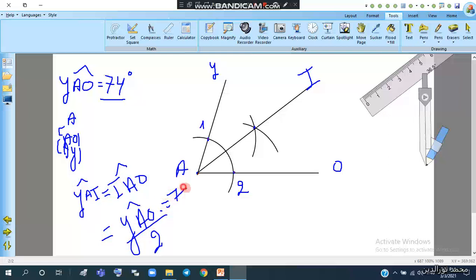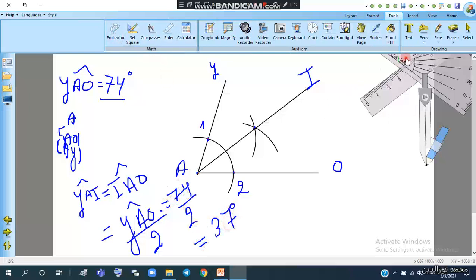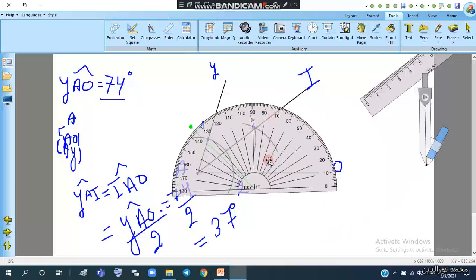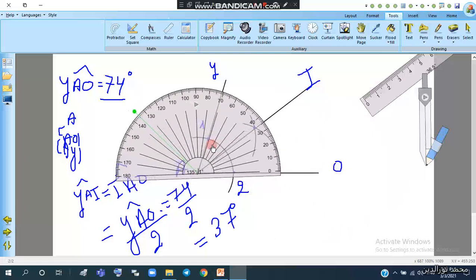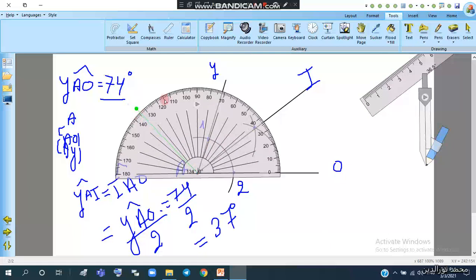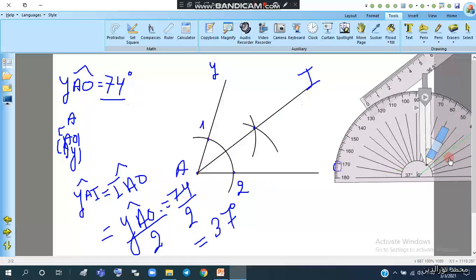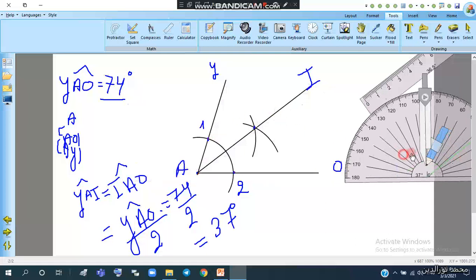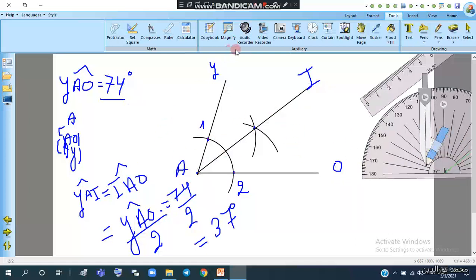That's 74 over 2, so they will equal 37 degrees. Let's confirm that by measuring one of these two angles. It's 37 degrees. The other will be equal since we divided it in half. This is the first part of exercise 1.